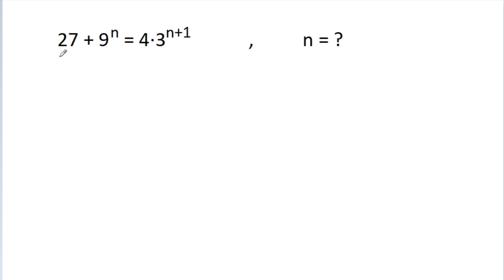We have given that 27 plus 9 power n is equal to 4 times 3 power n plus 1. We have to find the value of n.